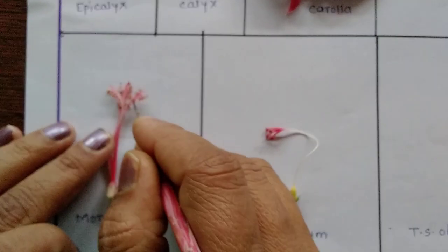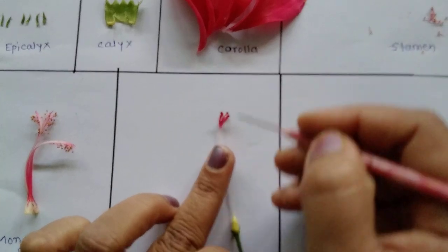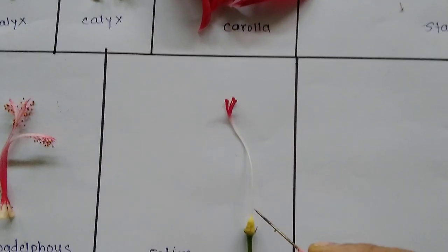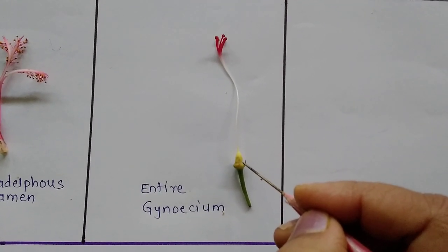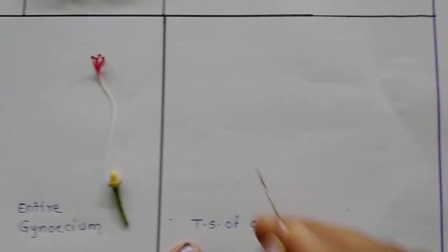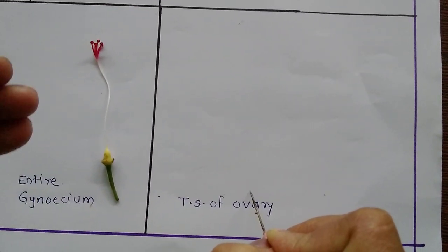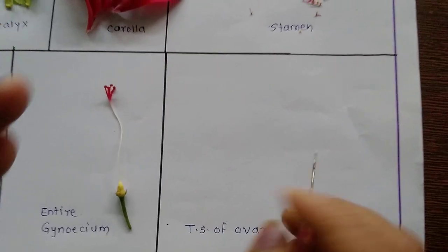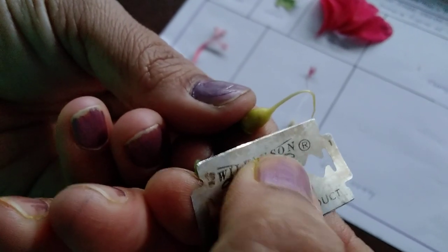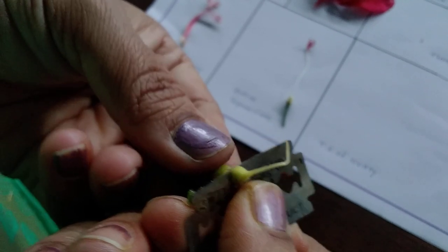This is the monadelphous stamen. After removing it, we get the entire gynoecium. These are the five stigmas. The long tube is called the style, and the bag-like structure at the base is called the ovary. Now we have to take a transverse section of this ovary, show it to the examiner, and draw the figure in your answer sheet for one mark. So take a transverse section of the ovary very gently.